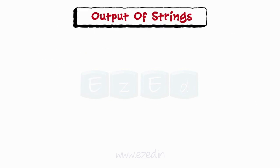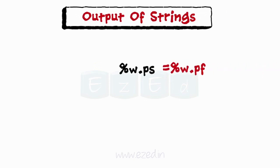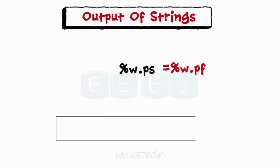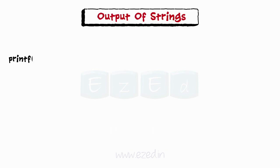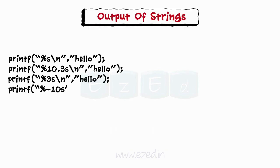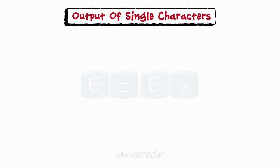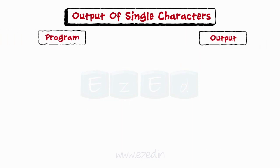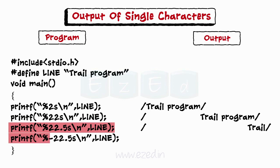Lastly, let's learn how to output strings. The general format is the same as the one for floating point: w specifies the width, and p specifies that only the first p characters are to be displayed. The display is left justified. Let's go through these lines — when they are executed, they print the corresponding output. We write a program to understand printing of character strings; this program prints the word 'trial program' in different formats. Look at the output, which changes on the execution of each line.